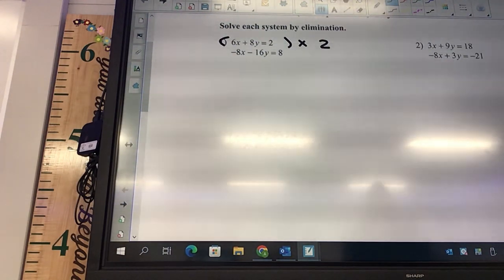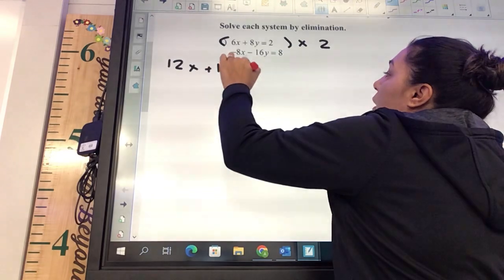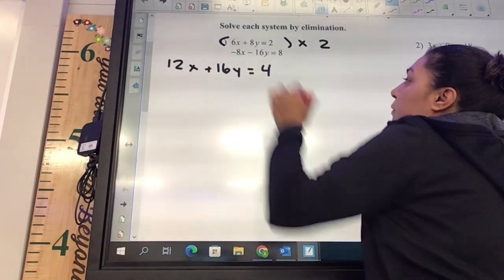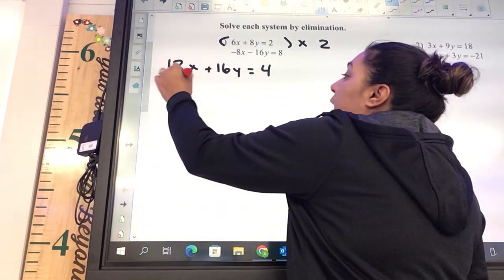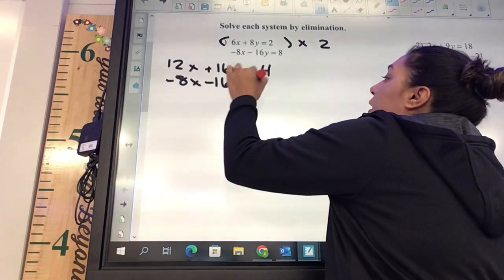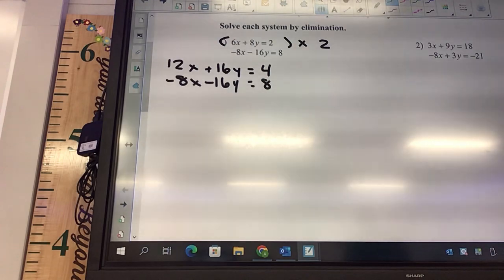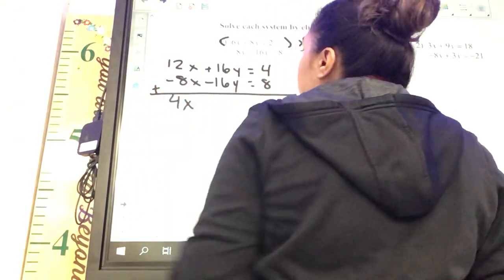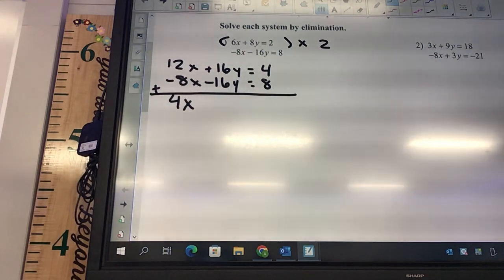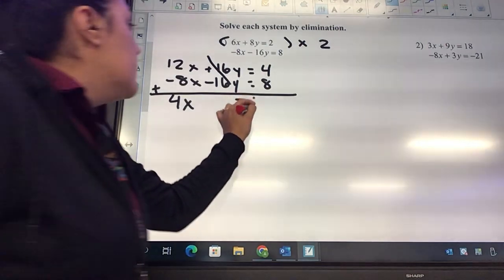So 2 times 6 is going to be 12x plus 2 times 8 is 16y equals 2 times 2 is 4. Okay, bottom equation, are we changing anything? No. Negative 8x minus 16y equals 8. Okay, and then we're going to add those two together. 12 plus negative 8. 4x, 16 plus negative 16. Yeah, they cancel. And then 4 plus 8 is 12.